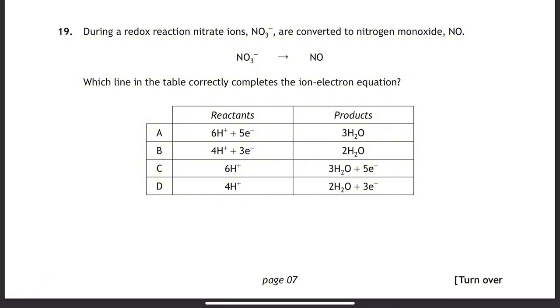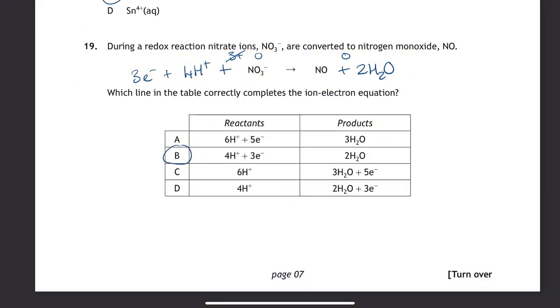Balancing the half equation. First step is balancing the principal element, which is nitrogen here, and they're already balanced. Next step is adding water to balance the oxygen. We've got three oxygens here and one on this side, which means we need to add two moles of water. Then we add hydrogen ions to balance the hydrogens. That's four hydrogens we need on this side. Then we add electrons to balance the charge. On the left we've got four positives and one negative, so net three plus, which means we need to add three negative electrons to bring this up to zero as well.